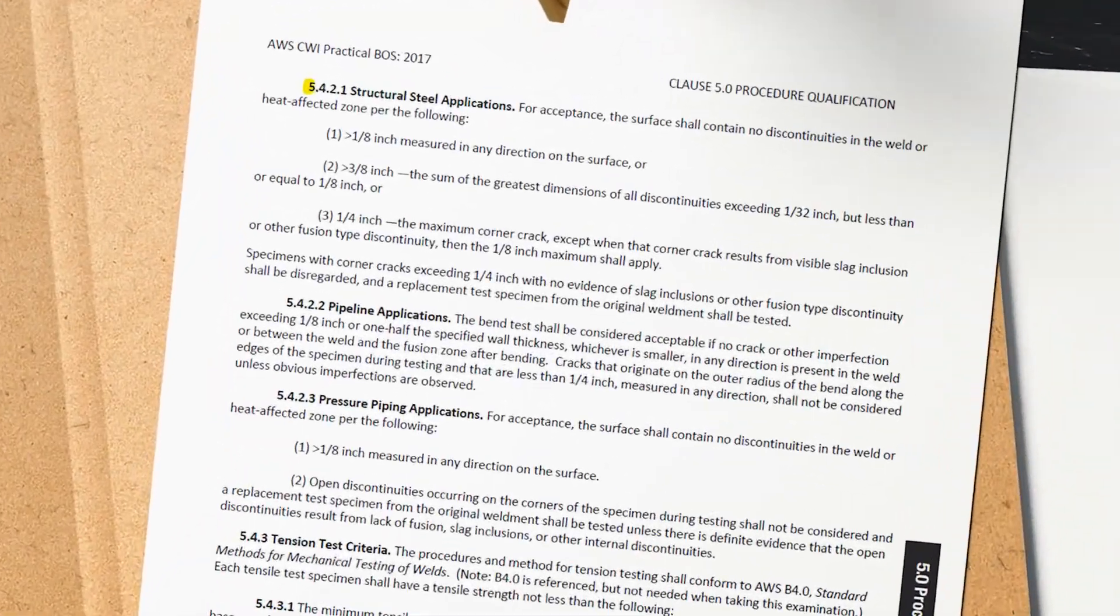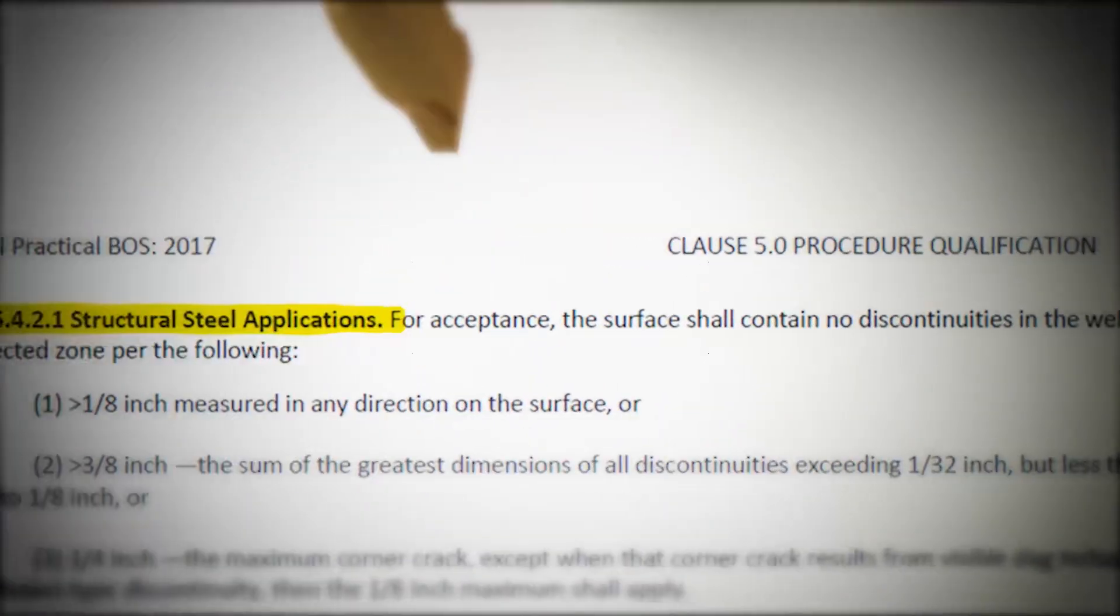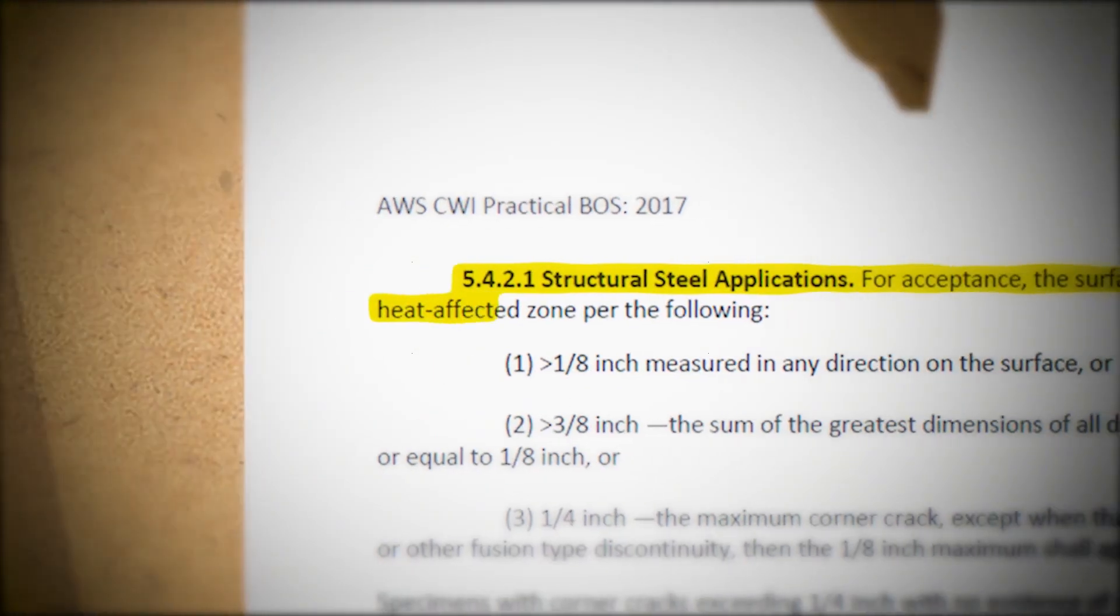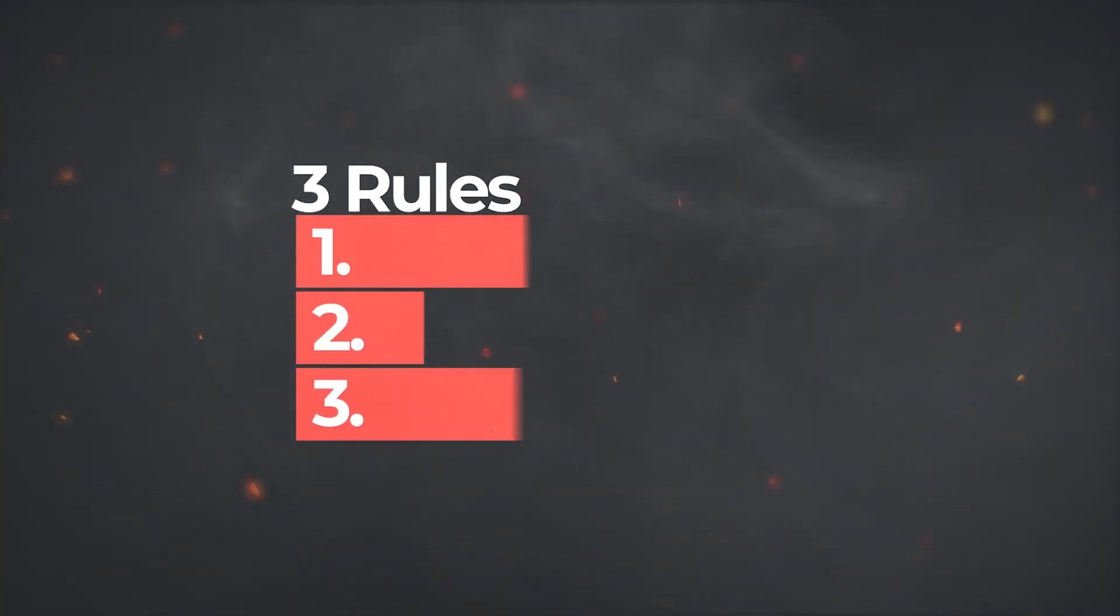This video will mainly focus on 5.4.2.1 Structural Steel Applications. For acceptance, the surface shall contain no discontinuities in the weld or heat affected zone per the below. There are three rules for this section and you're going to have to figure out which one will apply depending on what the question asks or what discontinuity you see.